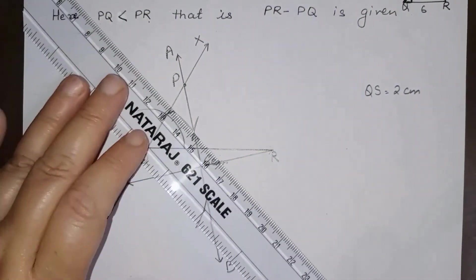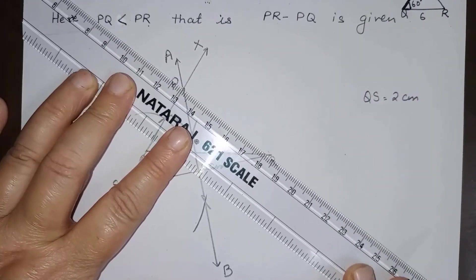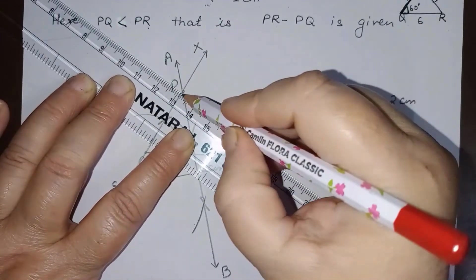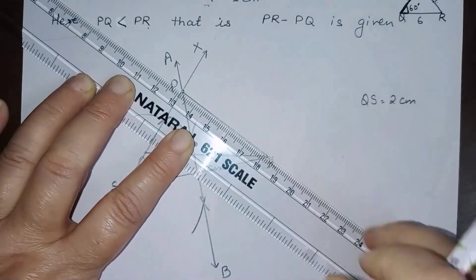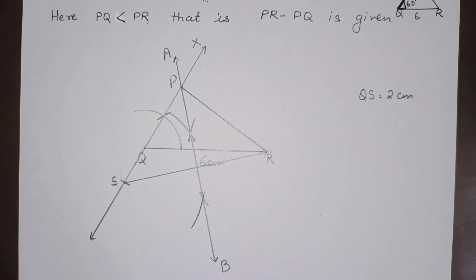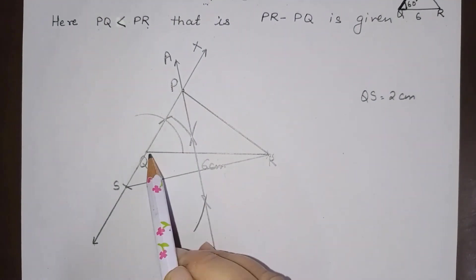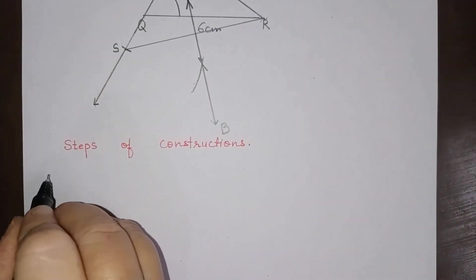So we will join PR. Join PR. So triangle PQR is the required triangle. So let us now write steps of construction.